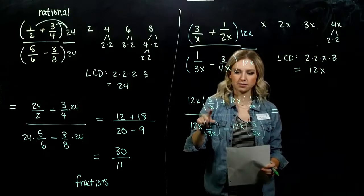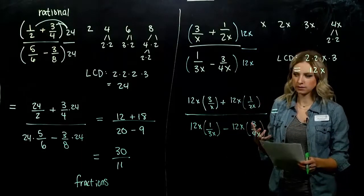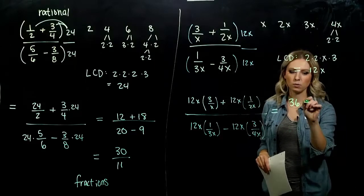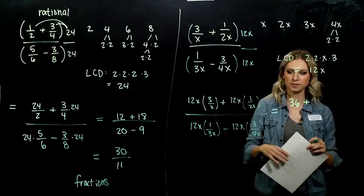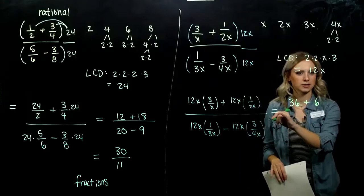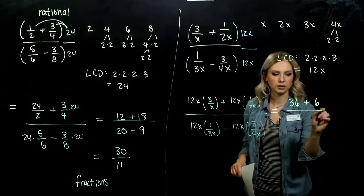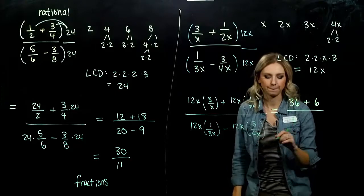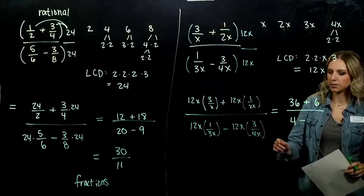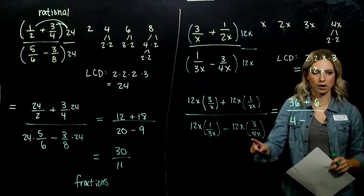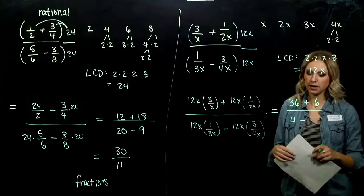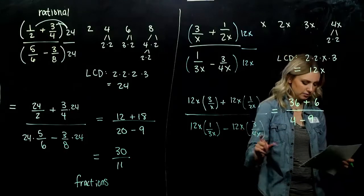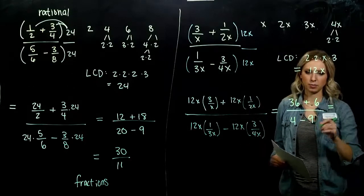Simplifying each term by doing the division first: 12x divided by x gives 12, so 12 times 3 is 36. Next, 12 divided by 2 gives 6, and the x's cancel. Down below: x divided by x cancels, and 12 divided by 3 gives 4. Then 12 divided by 4 gives 3, and 3 times 3 gives 9, with the x's canceling on that last term. Up top: 36 plus 6 is 42. Down below: 4 minus 9 is negative 5. So our result is 42 over negative 5.